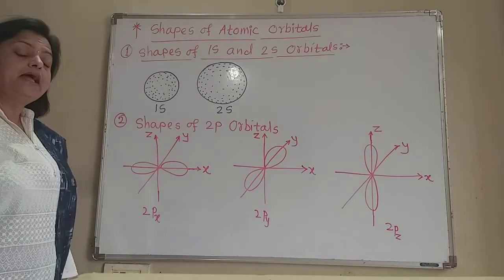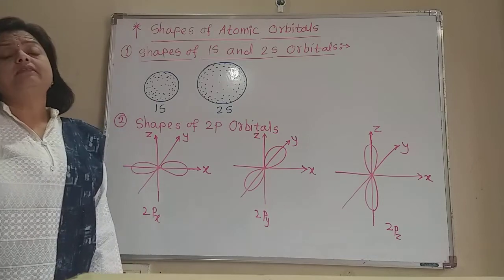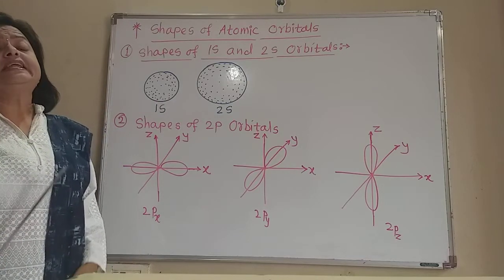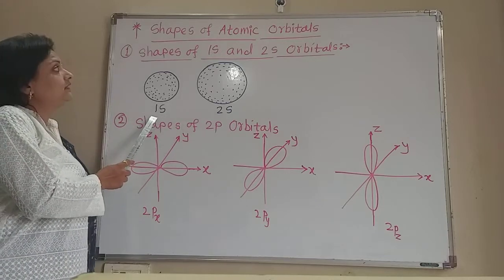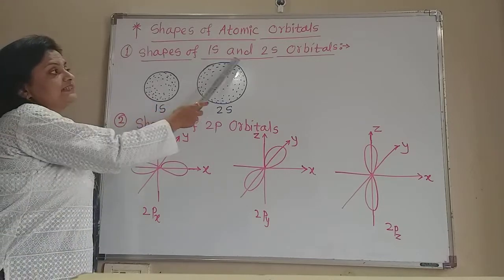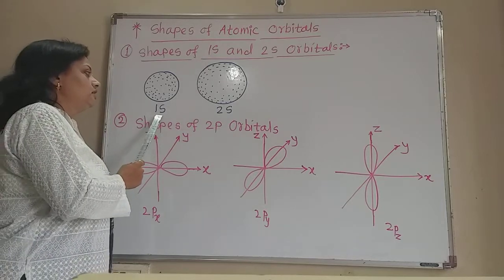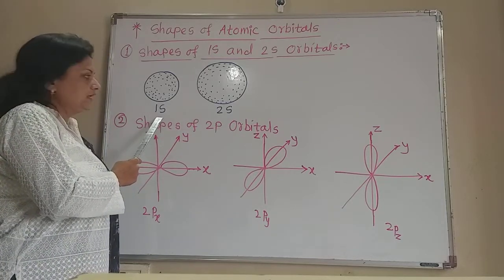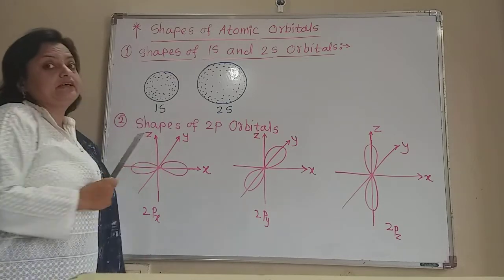First, come to the S orbital. S orbitals are always spherical in shape as shown in the figure. See here the shapes of 1s and 2s orbitals. This is the first orbital, 1s orbital, and it is spherical in shape.